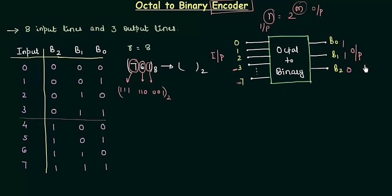Similarly, if 7 is high, b0, b1, b2 will be 111. So in this manner we will encode the octal to binary.